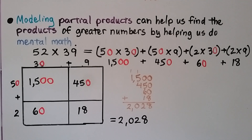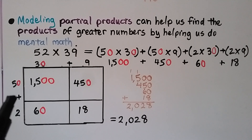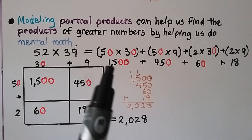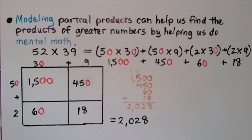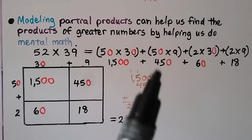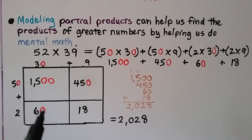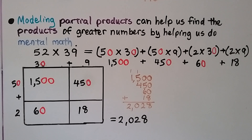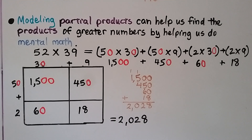Modeling partial products can help us find the products of greater numbers by helping us do mental math. We have 52 times 39. We break the 52 into 50 plus 2 and the 39 into 30 plus 9. 50 times 30: think of 5 times 3 (15), two zeros in the factors gives 1,500. 50 times 9: 5 times 9 is 45, one zero gives 450. 2 times 30 equals 60. 2 times 9 equals 18. We add our partial products and get 2,028. The partial products really helped us do mental math!